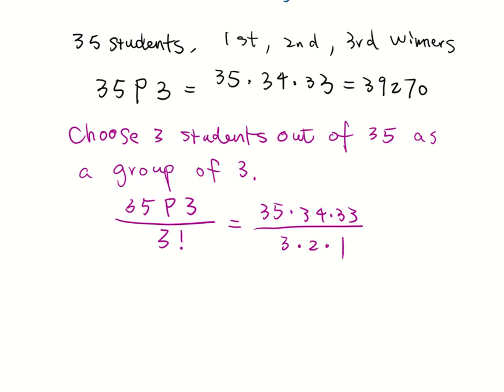We can do a little bit of cancellation here. I know that 34 and 2, they have a common factor of 2, so that's 17. This is 1. 33 and 3 becomes 11 and 1. So the answer is 35 times 17 times 11.